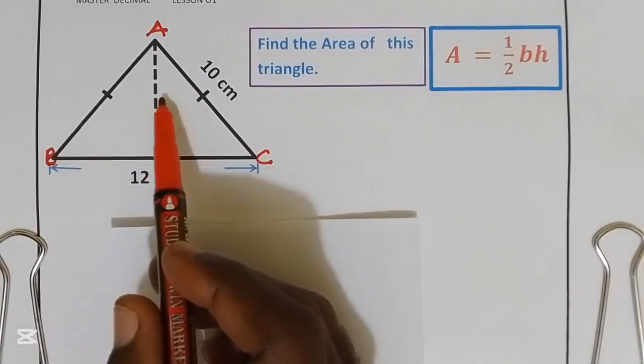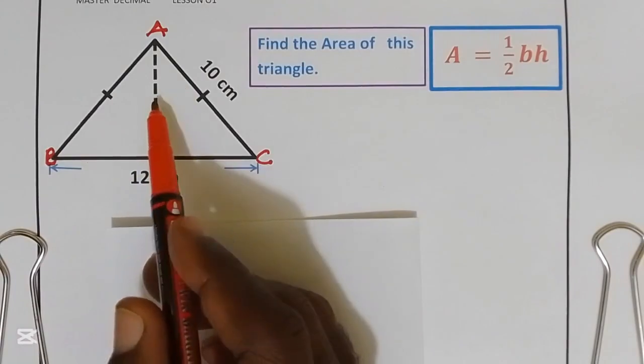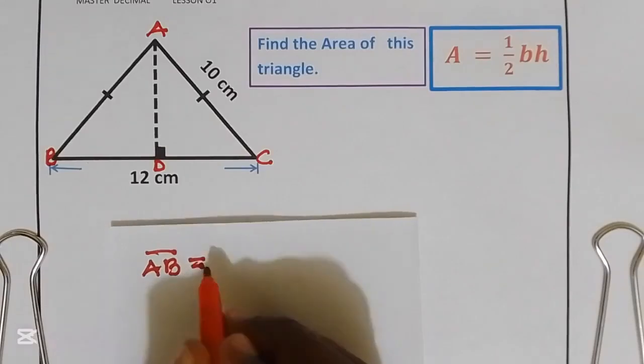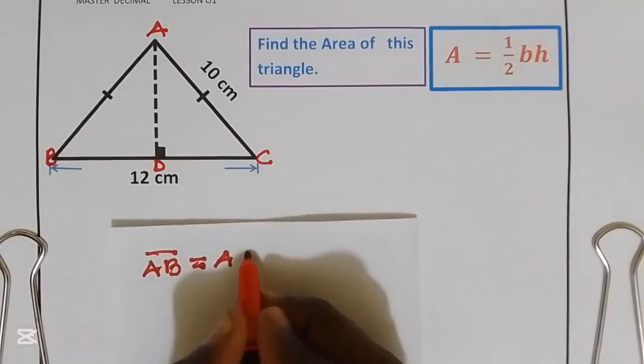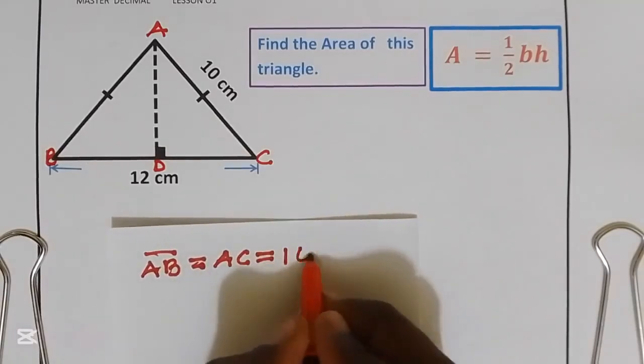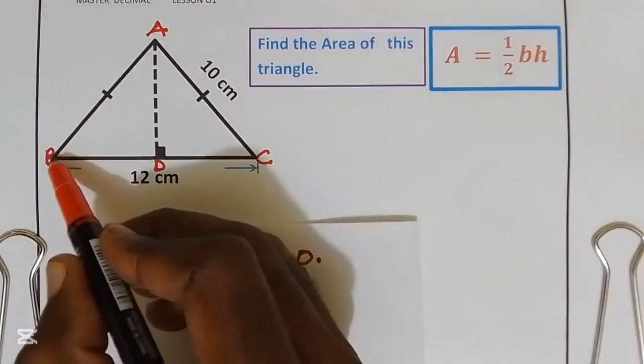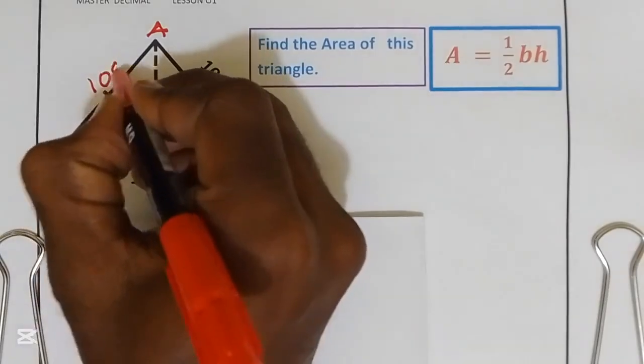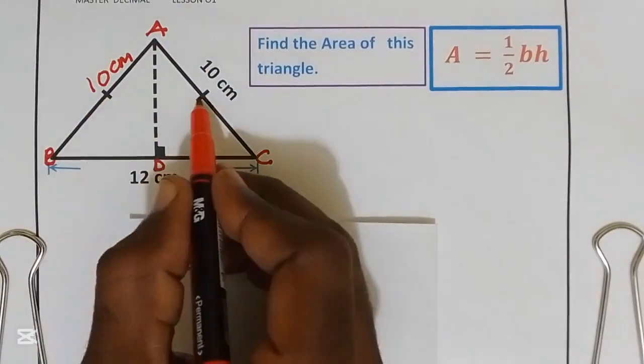This triangle is an isosceles triangle where distance AB is equal to distance AC, equal to 10 centimeters. So distance AB is equal to 10 centimeters, as they have shown to us by using this sign.